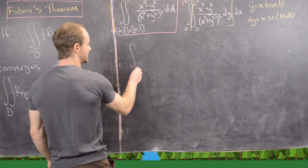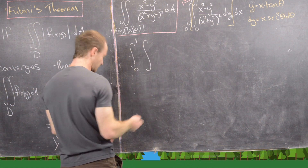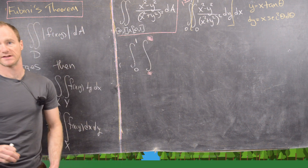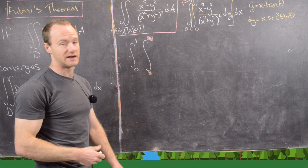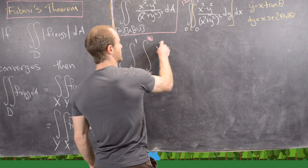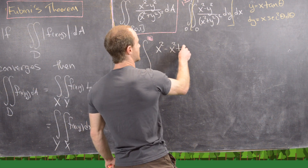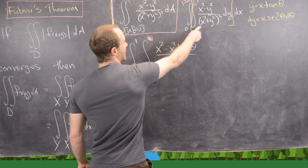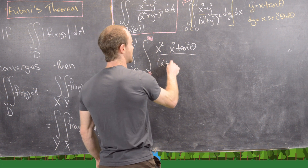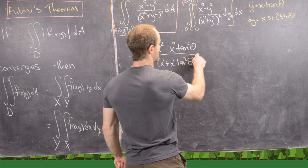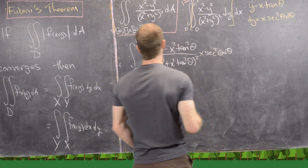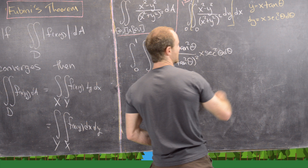That gives us the integral from 0 to 1 on the outside, then the inner integral — I'll go back to x's and y's when this is done, so I'll put little boxes to remind me. In the numerator we have x² minus y² = x² − x² tan²θ. In the denominator we have x² + y² = x² + x² tan²θ, and this whole thing is squared. Then dy = x sec²θ dθ, with dx on the outside.